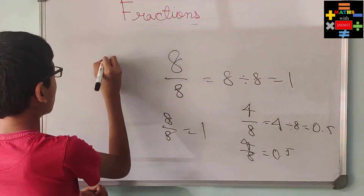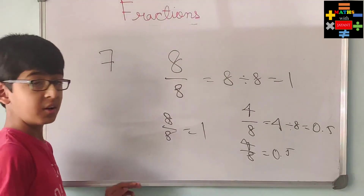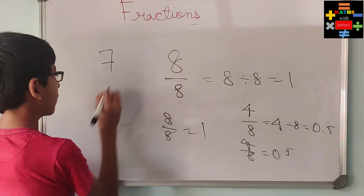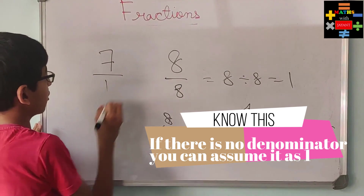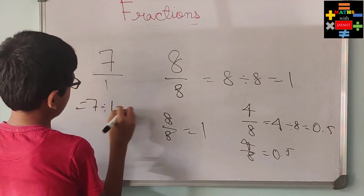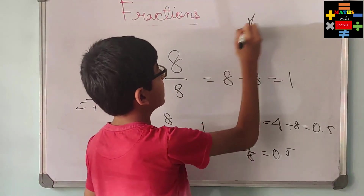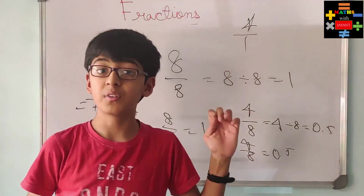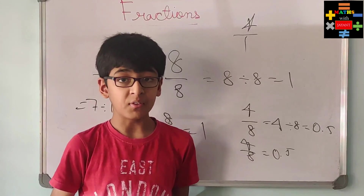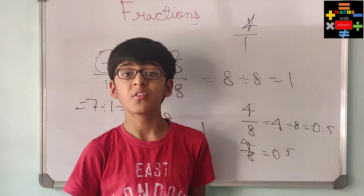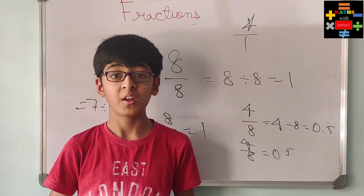Now suppose if there's a whole number that I have — suppose seven. It has no denominator, so you can assume the denominator as one, and that's not going to change anything. Because seven divided by one is seven, which is just seven. So if there's no denominator for any number, you can assume its denominator as one. Hope you understood the very basics of fractions. In our next video we will discuss what are equivalent fractions and how to simplify fractions. Thank you very much.